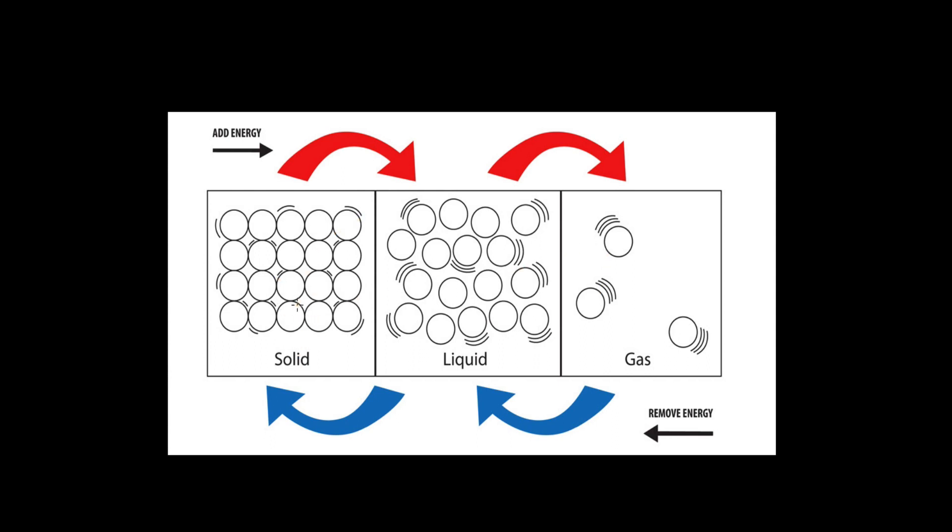Now what the third law is saying is that, in your solid, if you were to remove all the heat from the solid, if you got it down to zero Kelvin, then what would happen to the entropy? Remember, entropy deals with disorder. So the exact definition of entropy is the amount of possible microstates.